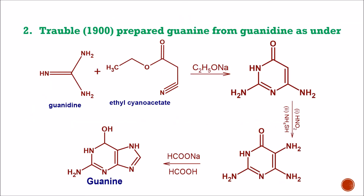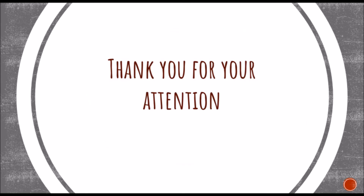Another method of preparation of guanine is given by Traube in 1900. He prepared guanine from guanidine and ethyl cyanoacetate. The lone pairs of electrons of nitrogen attack the carbonyl carbon of this compound, and another lone pair attacks the carbon of the nitrile group. In the presence of C2H5ONa, ring closure takes place and a structure is formed. After reaction in the presence of HNO2 (nitrous acid) and NH4SH, an NH2 group at carbon number 5 is attached. Further reaction in the presence of HCOONa and formic acid proceeds.